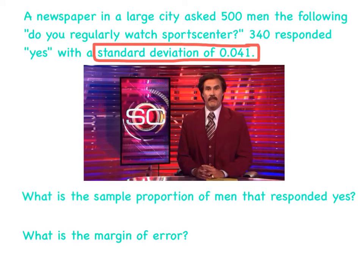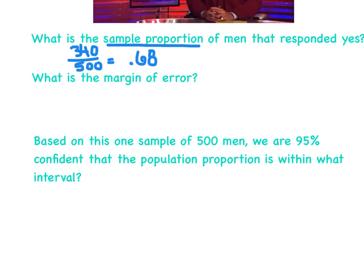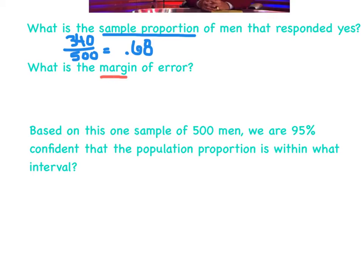First, we want to find the sample proportion of men that responded yes. I'm going to take the 340 that responded yes and divide by 500, which gives me a proportion of 0.68. About 68% of the men surveyed responded yes. Now what was the margin of error? We're going to take that standard deviation and multiply it by 2, which gives us a margin of error of 0.082. So we could be off by 0.082 percentage points in either direction, either a little higher or a little low.